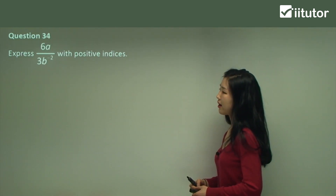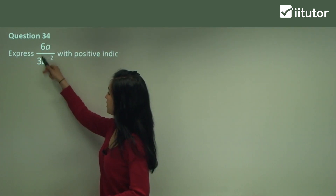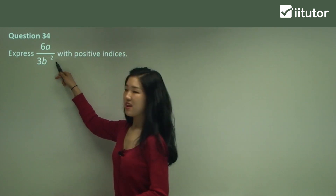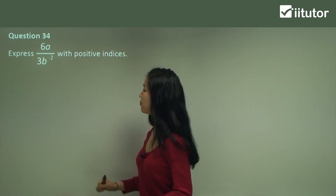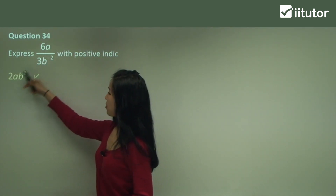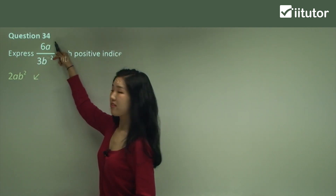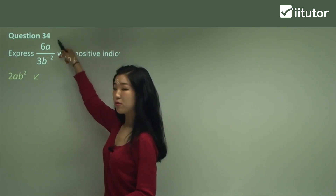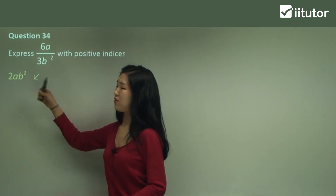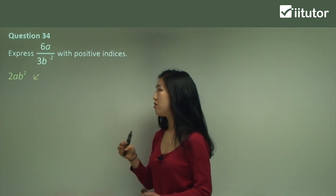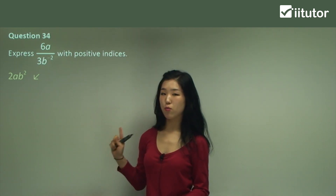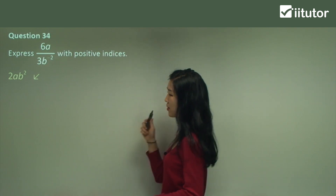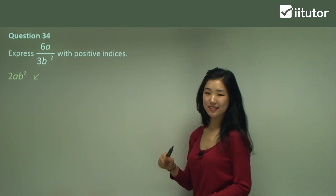Question 34. We're dividing. 6 over 3 — we can divide that. And B has a negative index. Well, 6 divided by 3 is 2. A has a positive index, so leave it as it is. And B is negative, so move it up to the numerator. So I have B to the power of positive 2. On the denominator we have nothing left, just 1, so we don't have to write it as a denominator. So we just have 2ab squared.